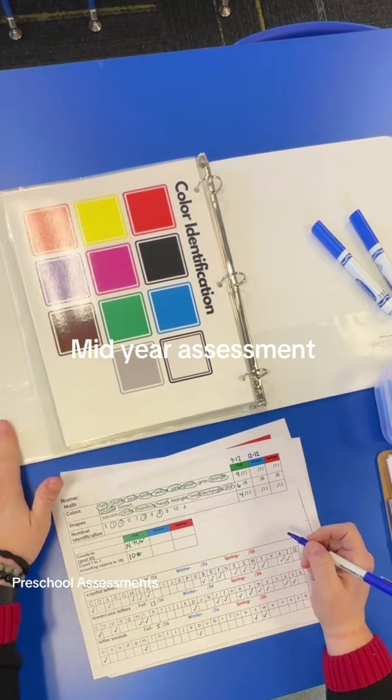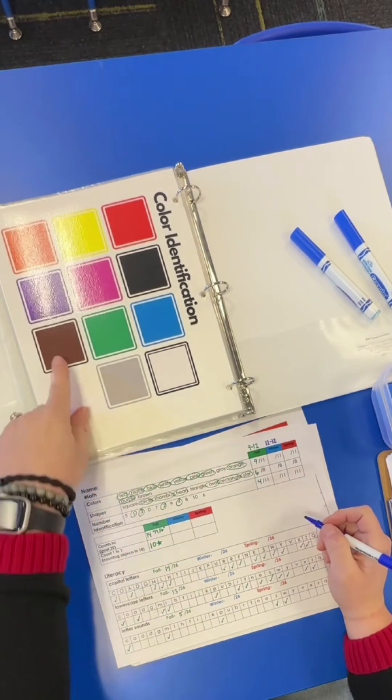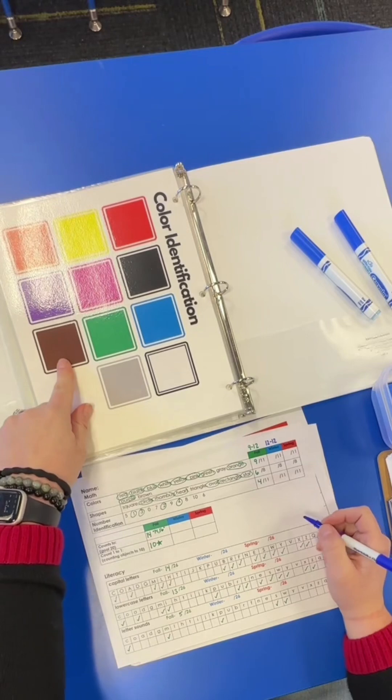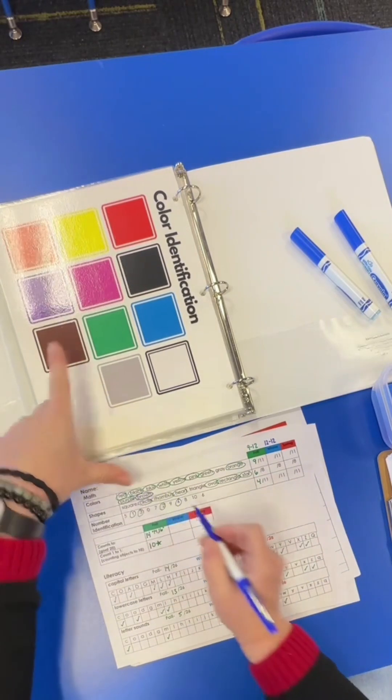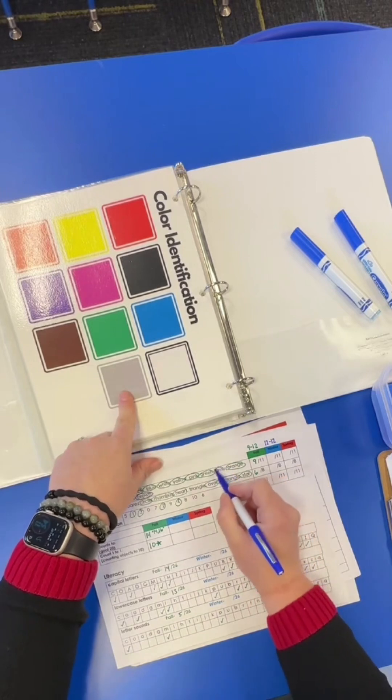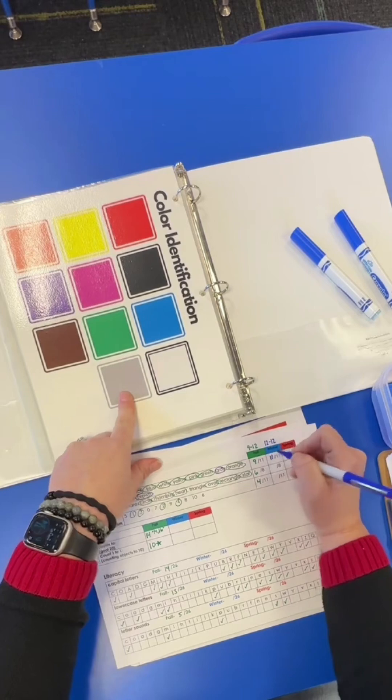Next, I'm only going to assess the items that the student did not know at the beginning of the year. Let's start with colors. Do you know this color? Yes, that's brown. What about this one? Gray. Yes. Great job. You know all of your colors.